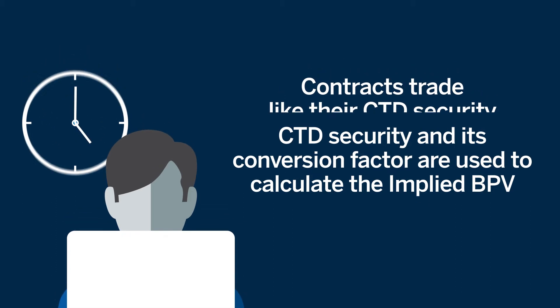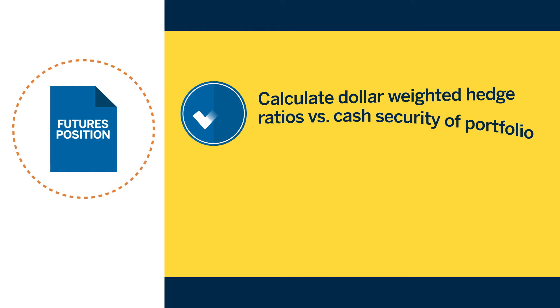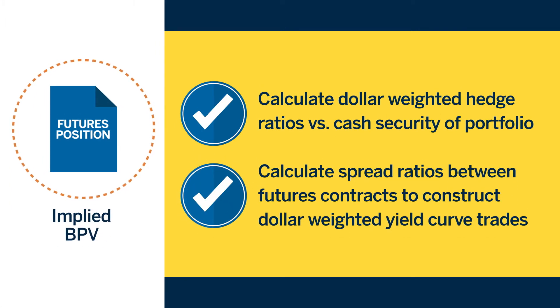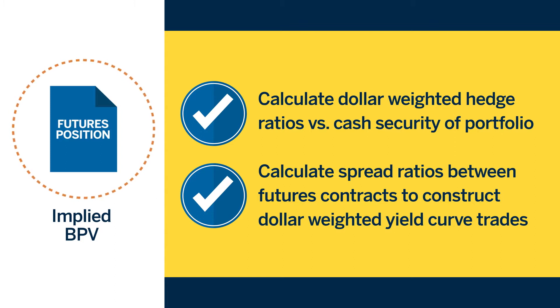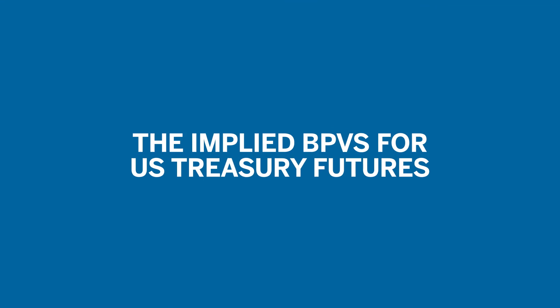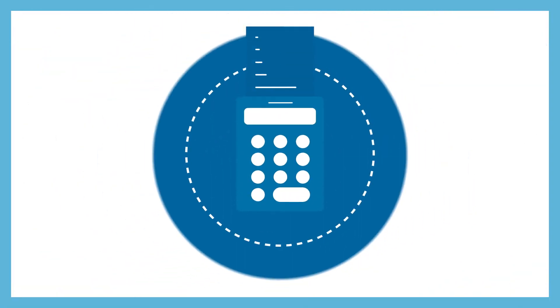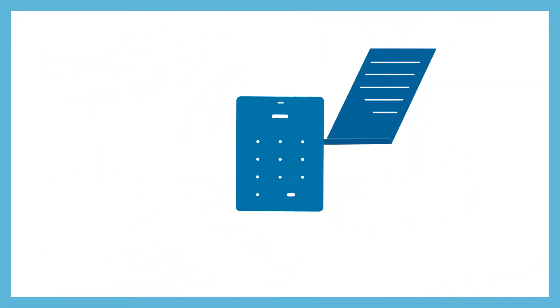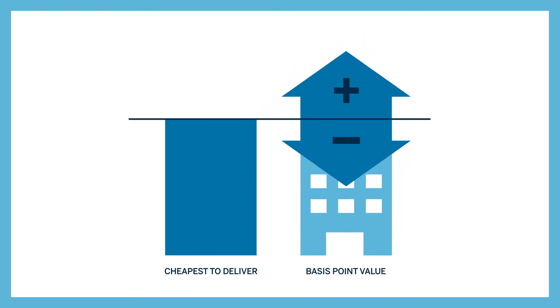Once we know a contract's CTD, we can determine its BPV and, using the security's conversion factor (CF) and some simple mathematics, arrive at the contract's implied BPV. The implied BPVs for US Treasury futures can be used to calculate appropriate dollar-weighted hedge ratios versus a cash security or portfolio, or to calculate the spread ratios between futures contracts so we can construct dollar-weighted yield curve trades.